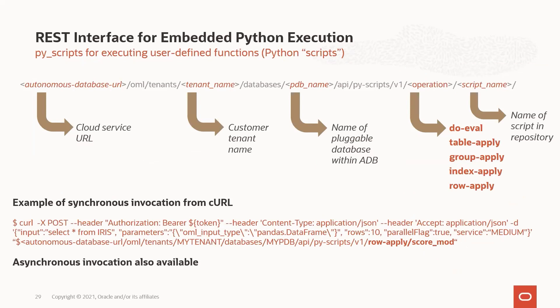The equivalent REST API call runs in synchronous mode — this is a POST request initiated from curl, though you can use any REST client like Postman. The REST API includes the Autonomous Database URL, tenant and database name, the table being scored (iris), 10 rows per invocation, the script to run in parallel under service level medium, using the row apply operation with the score_mod function saved in the script repository. Asynchronous mode is also available. Note that this REST interface URL is going to change soon to be more simplified for users.